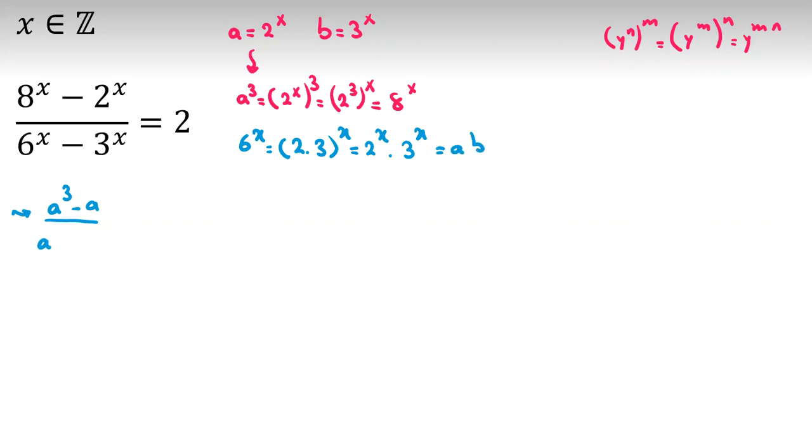So it is ab minus 3 to the x is b, equal to 2. Now we can multiply both sides by ab minus b to get rid of denominator on left-hand side. It will be a cube minus a equal to 2ab minus 2b.